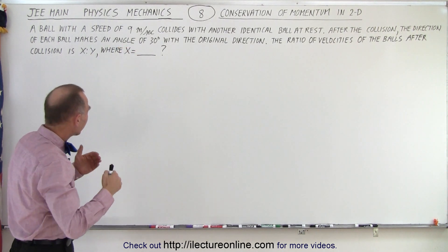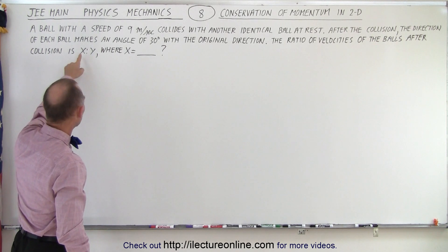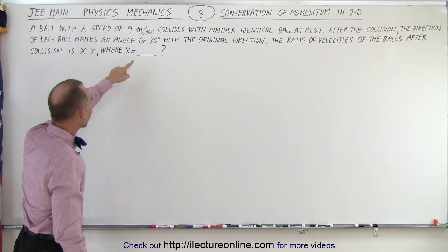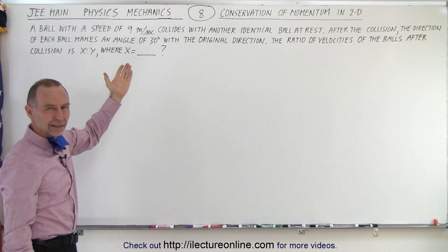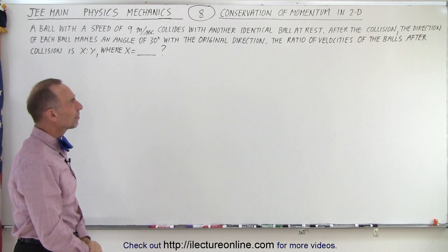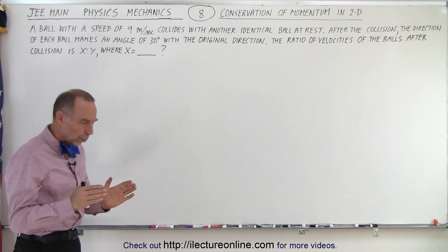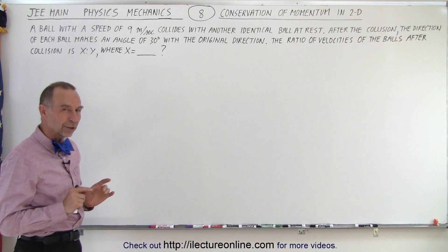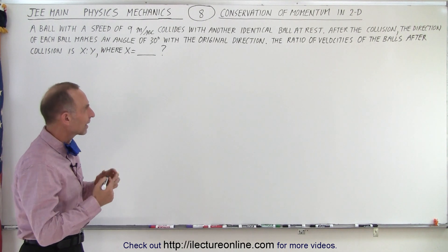And here's why it was confusing. They say the ratio of x to y where x is, but what is y? So that made it a little bit confusing. And also which velocities are they comparing to one another? So let's make a drawing to kind of get a feel for it.